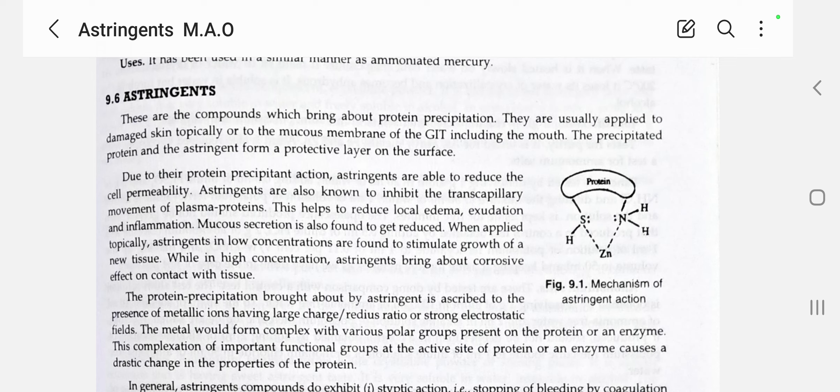Astringents are also known to inhibit the trans-capillary movement of plasma proteins. This helps to reduce local edema, exudation, and inflammation. Mucus secretion is also found to get reduced.